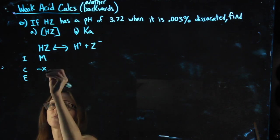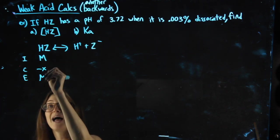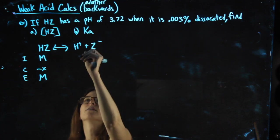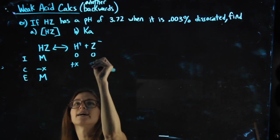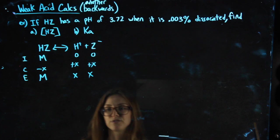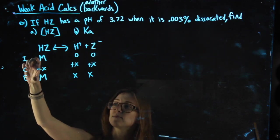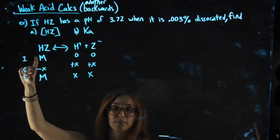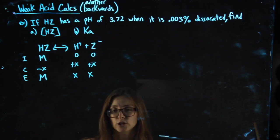It would then be minus X, and then we know X is really small compared to M, whatever that number is. X, 0, 0, plus X, plus X. That side should feel familiar. So I'm only doing this. I'm using M as another variable because I don't have the concentration of HC.